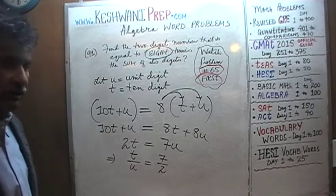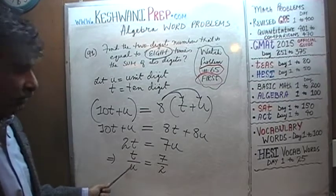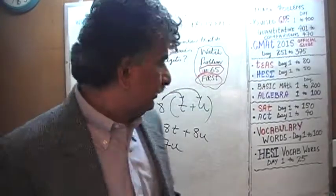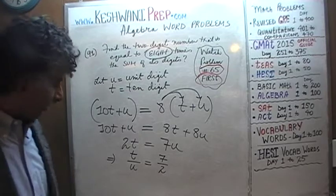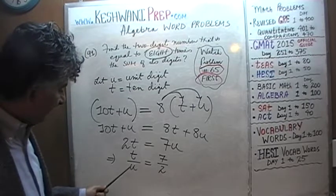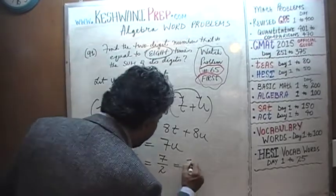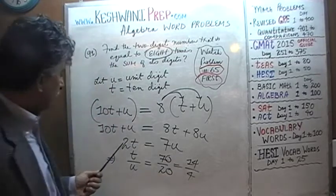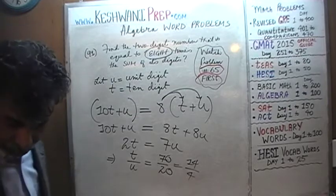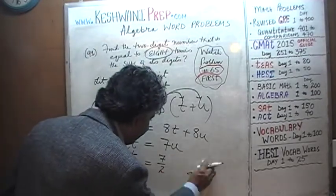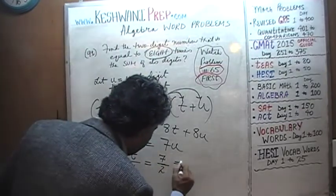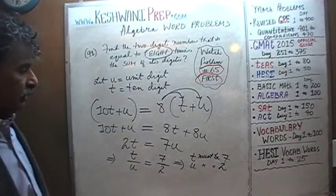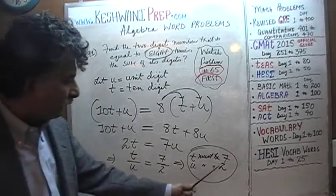The ratio of the tens digit to the unit digit is 7 to 2. As you can see, it is a two- or three-step process. Since T and U represent digits, they must each be a single digit. Therefore T cannot be 14 or 70, and U cannot be 4 or 20. Since the ratio is 7 to 2, T must be 7 and U must be 2. We just found our number — the answer is 72.